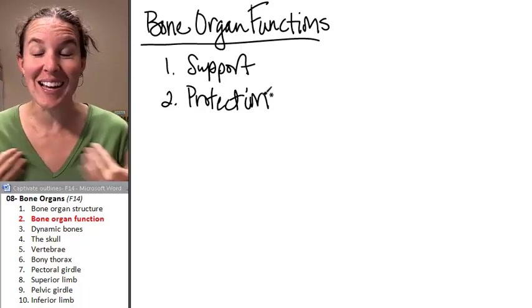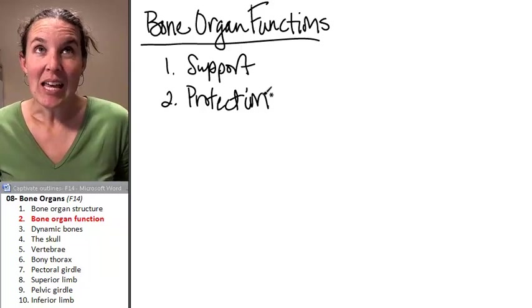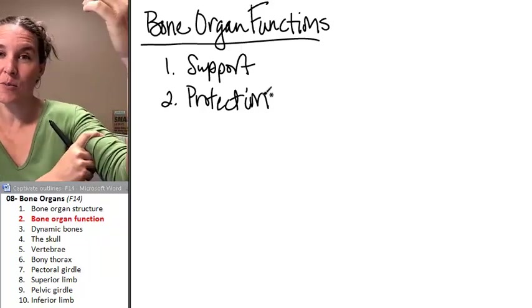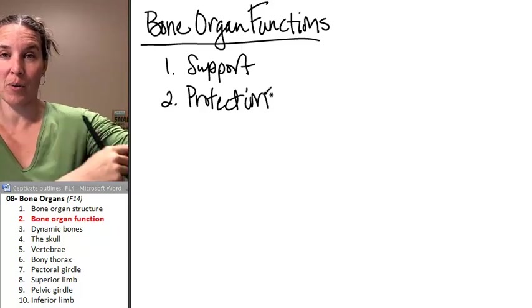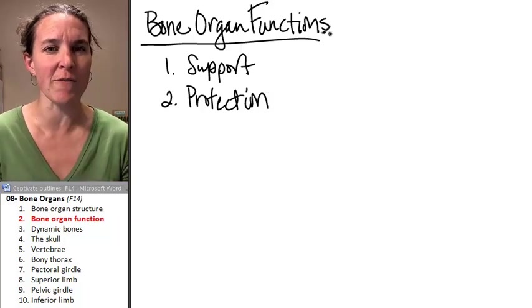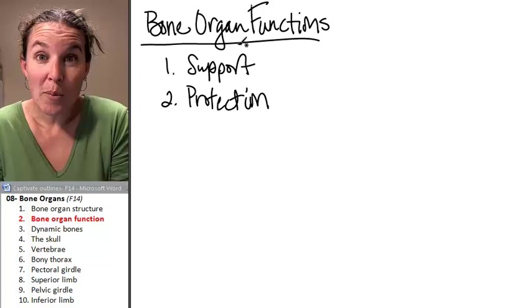Think about your ribs. It's armor for your heart and your lungs. If you think about your humerus, which is your upper arm bone, that's not really armor. That's serving a different function. But there are many bones that do protect.